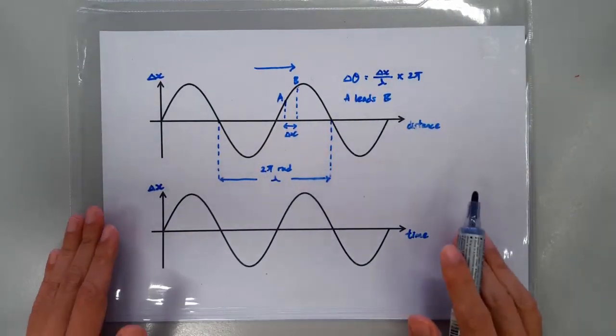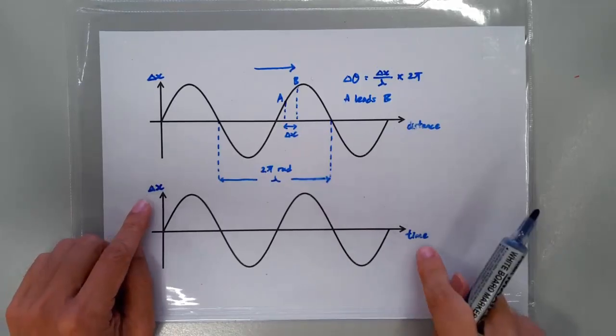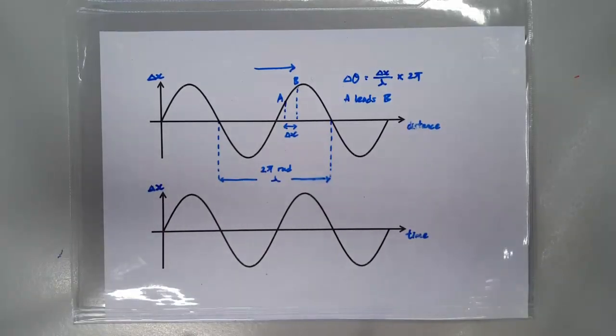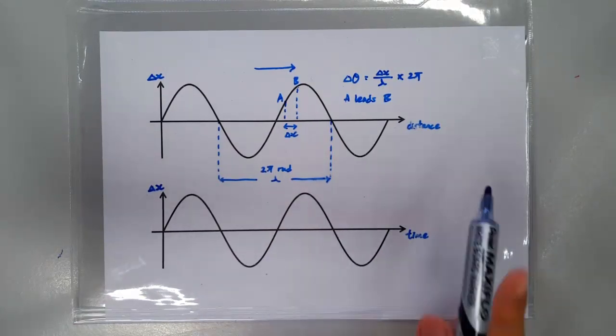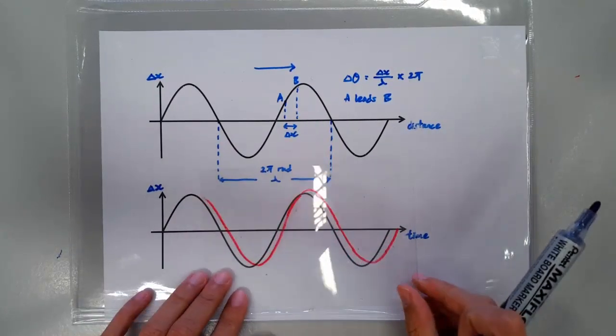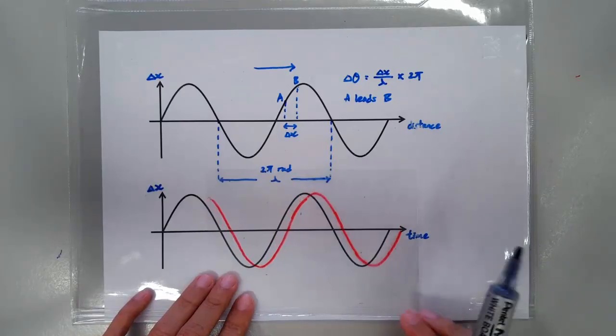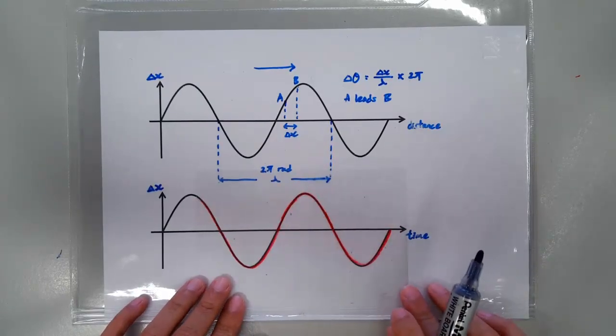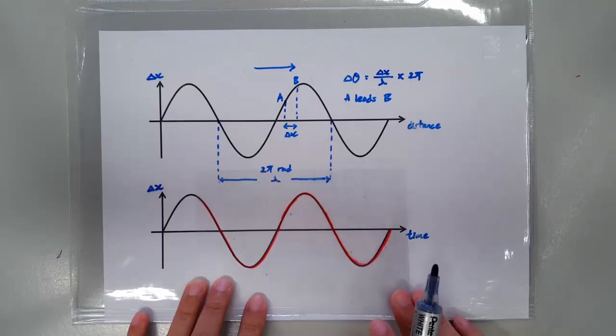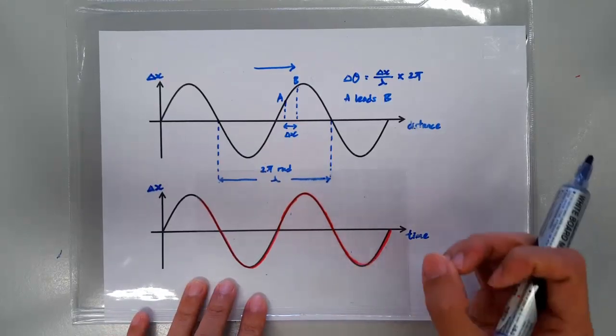Sometimes what you are given is the displacement time graph of two oscillations. So, one graph shows the displacement time graph of one oscillation, and there will be another displacement time graph for the other oscillation. So, if these two graphs are overlapped like this, then they are in phase, and the phase difference is zero.